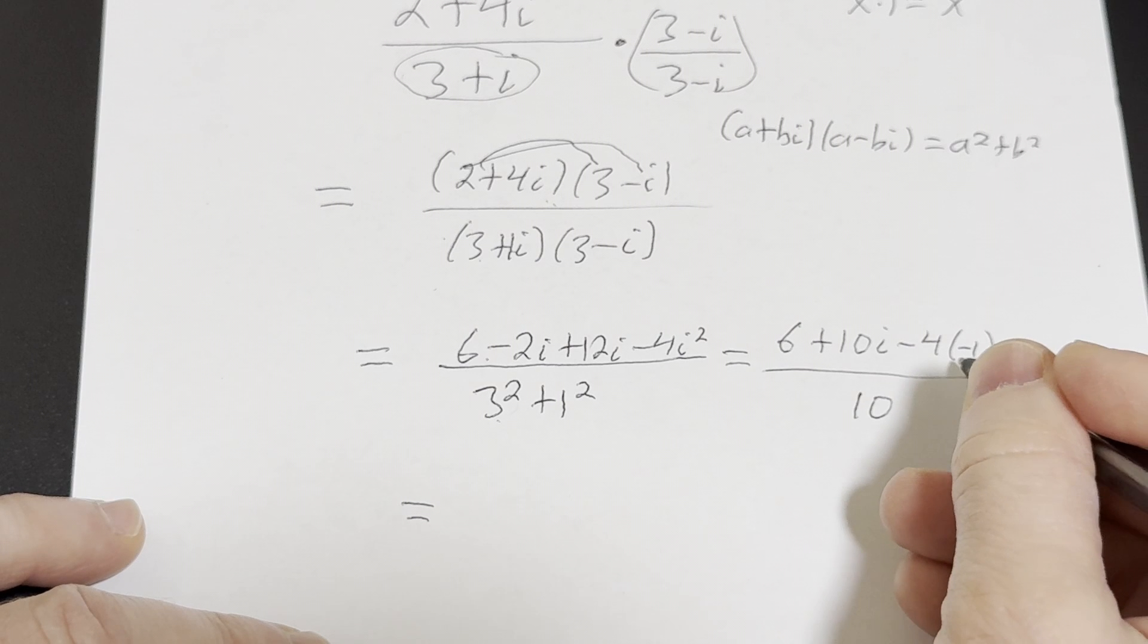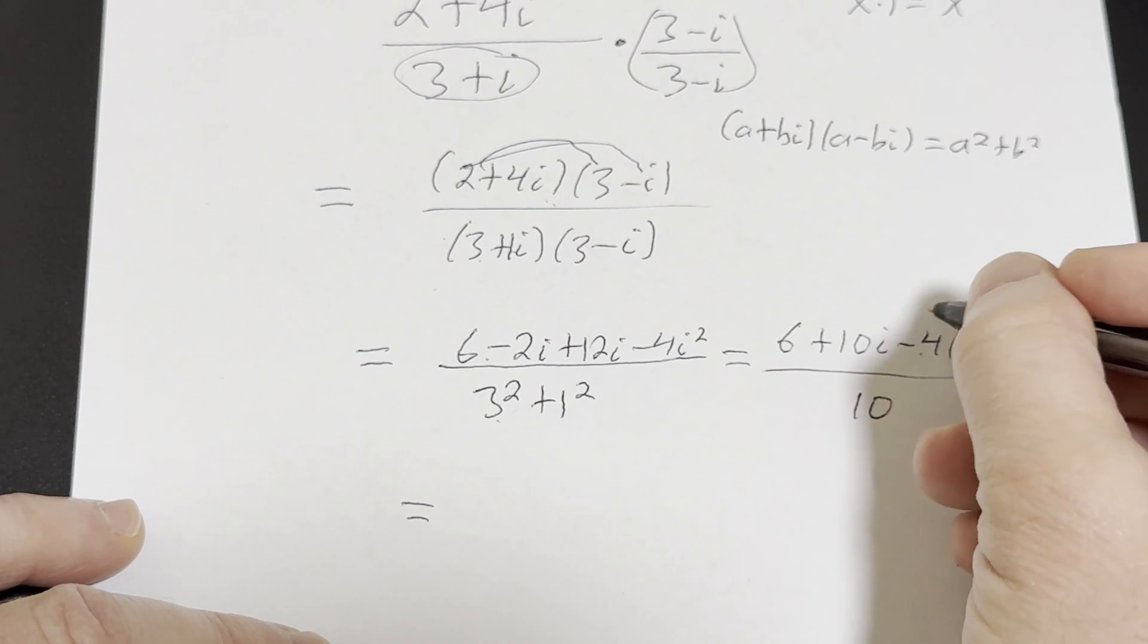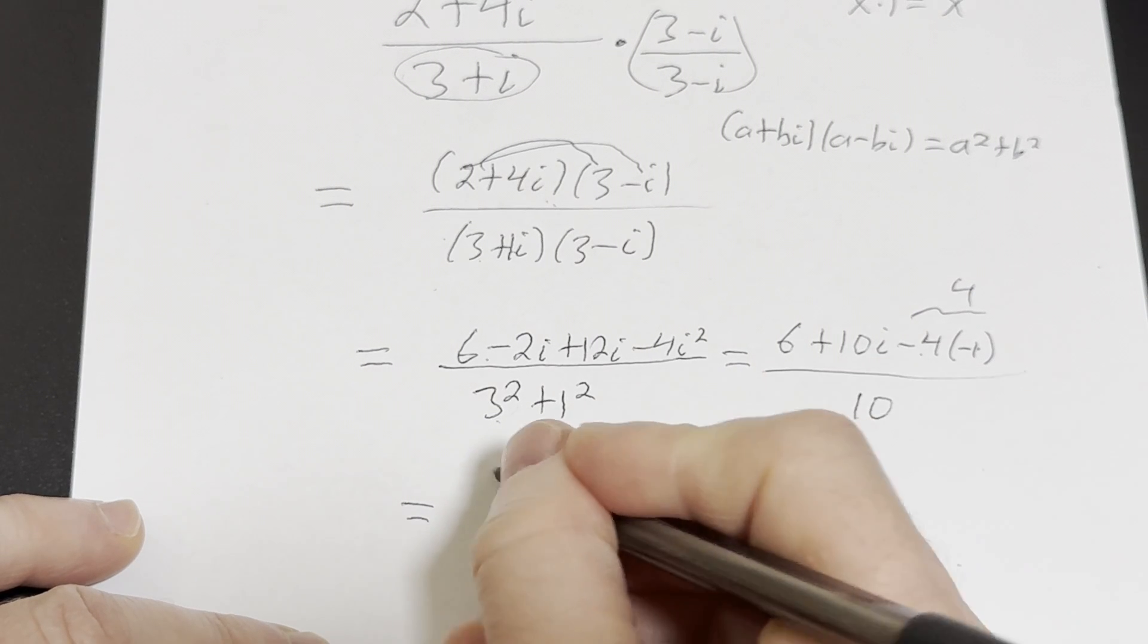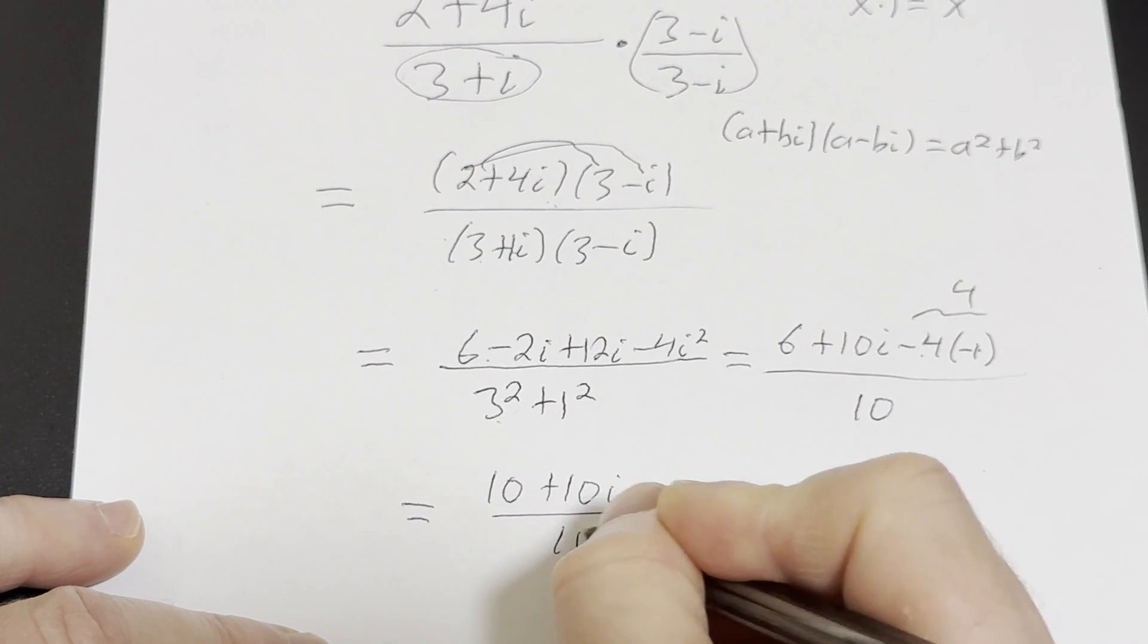This is equal to, so this is a positive 4, right? This is going to be a positive 4 because it's negative and negative. 6 plus 4 is 10. So you have 10 plus 10i over 10.